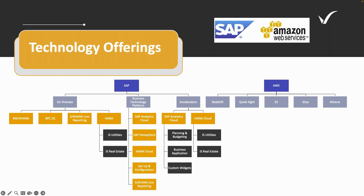This is a high-level view of the technology offerings we currently have at Visio. We have two work streams of service offerings: one on the SAP side and one on the AWS side. Both revolve around BI analytics and FP&A. Our primary focus right now is on cloud technologies, including SAP Analytics Cloud, SAP Datasphere, HANA Cloud, BTP setup and configuration. We also specialize in industry-specific solutions like SAP for utilities, with accelerators for analytics, planning, and budgeting.